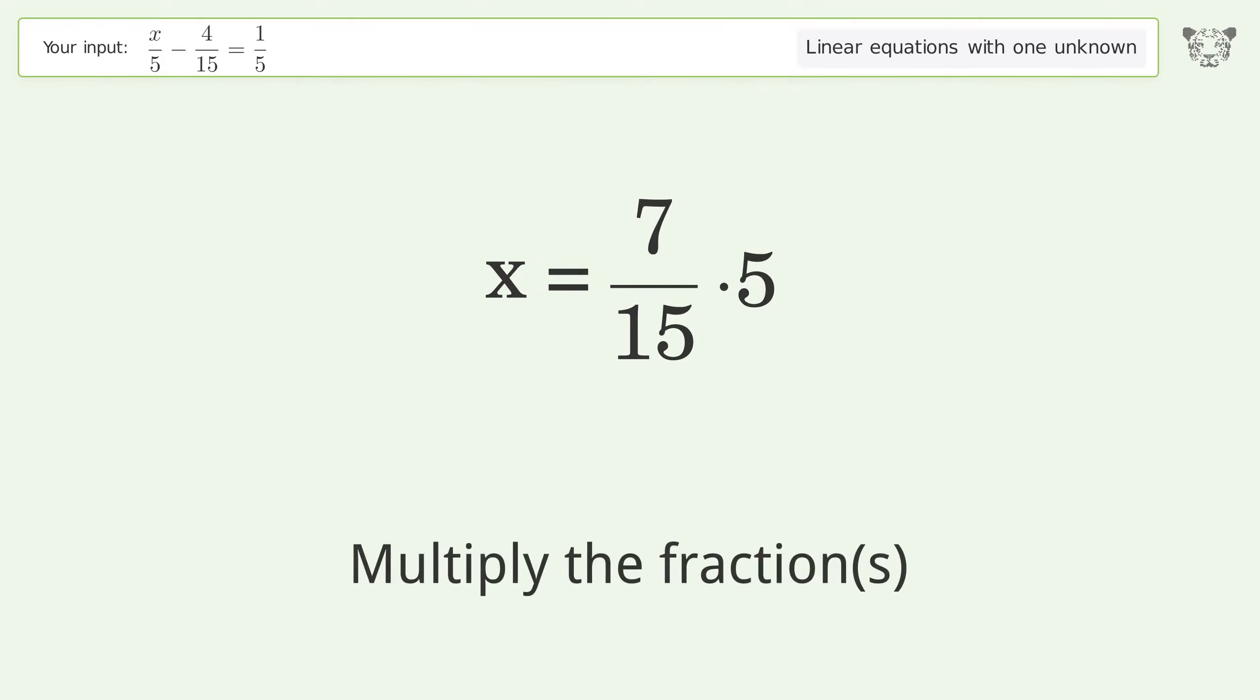Multiply the fractions. Simplify the arithmetic. And so the final result is x equals 7 over 3.